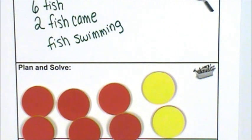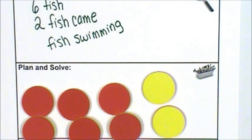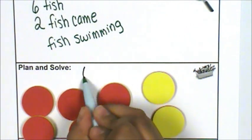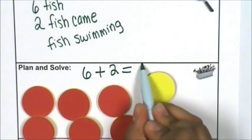So did I add or did I subtract? Well, I had six counters, I joined two more counters. That means I added, six plus two is eight.